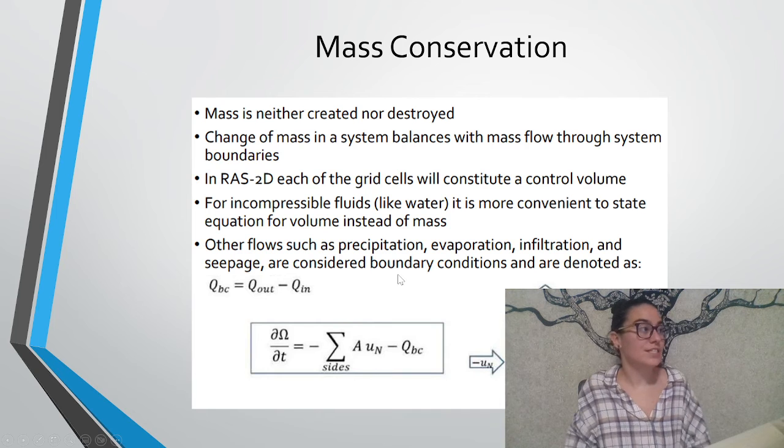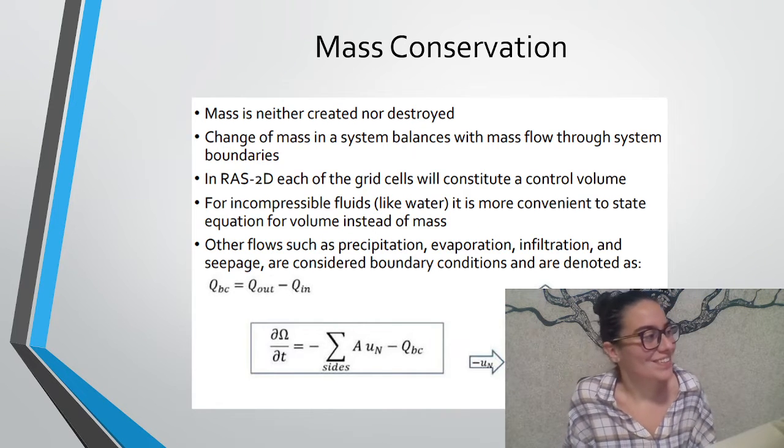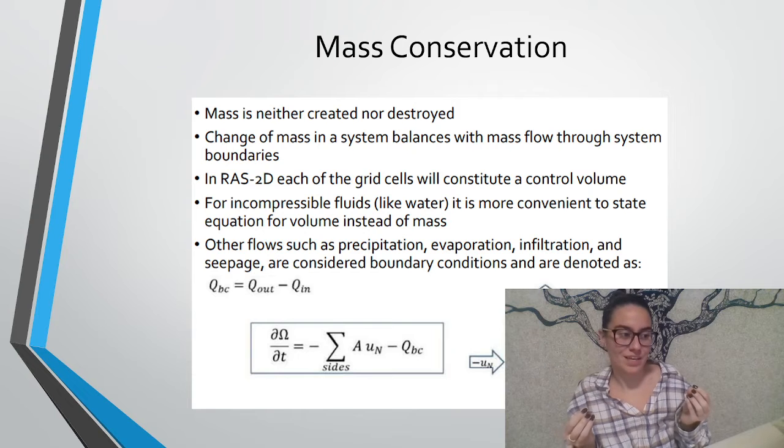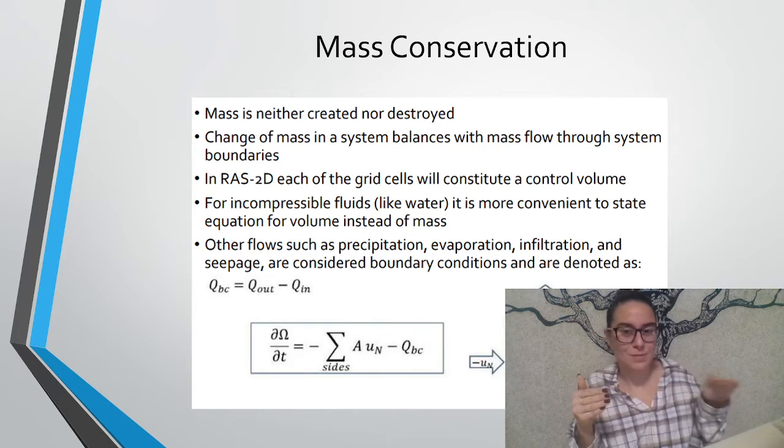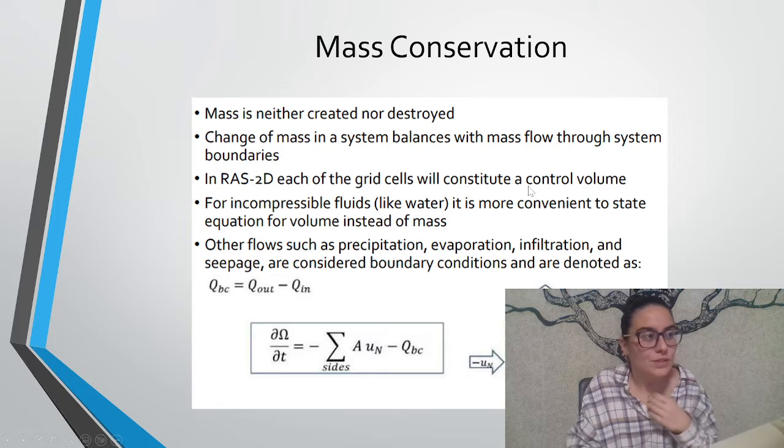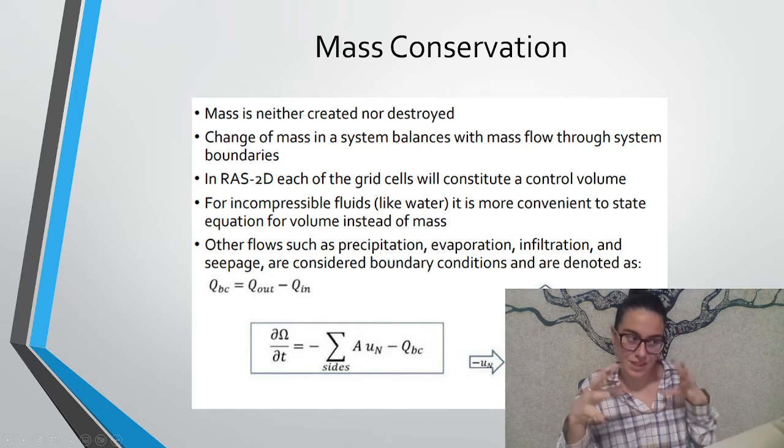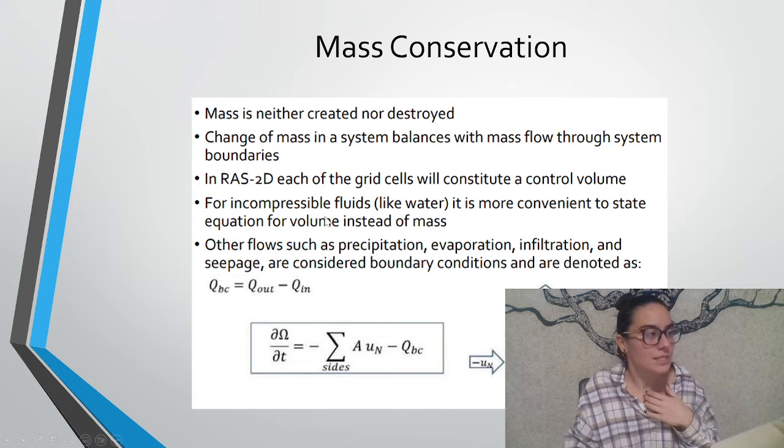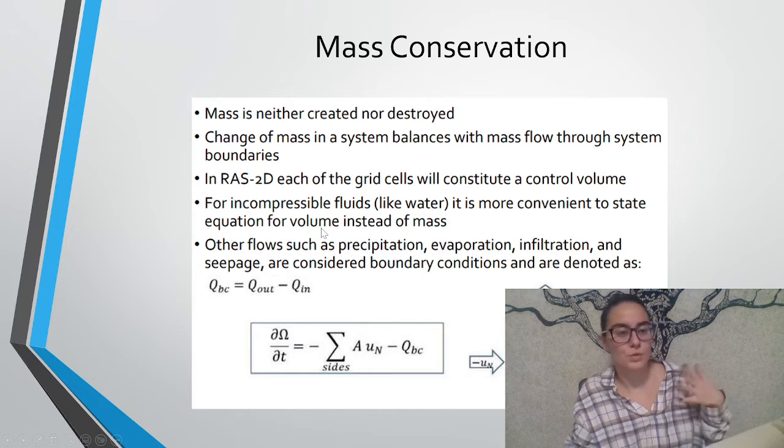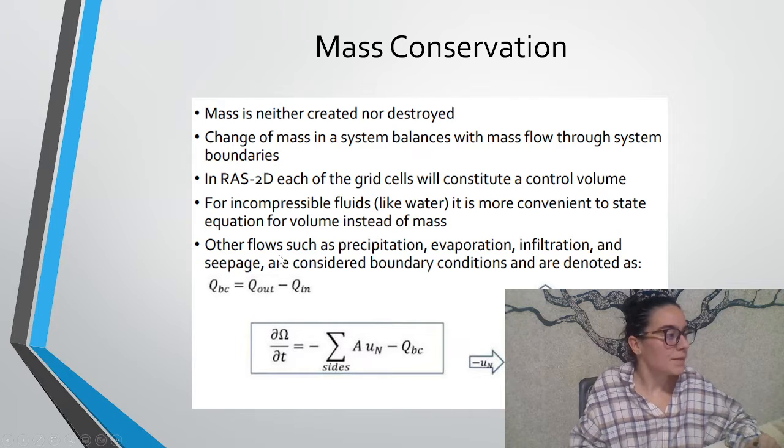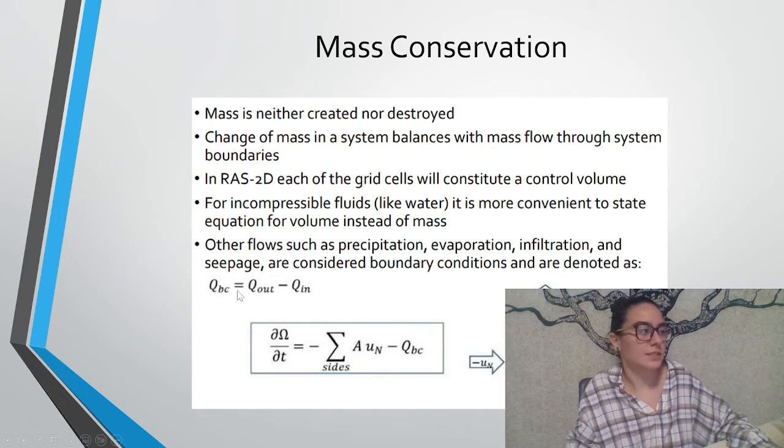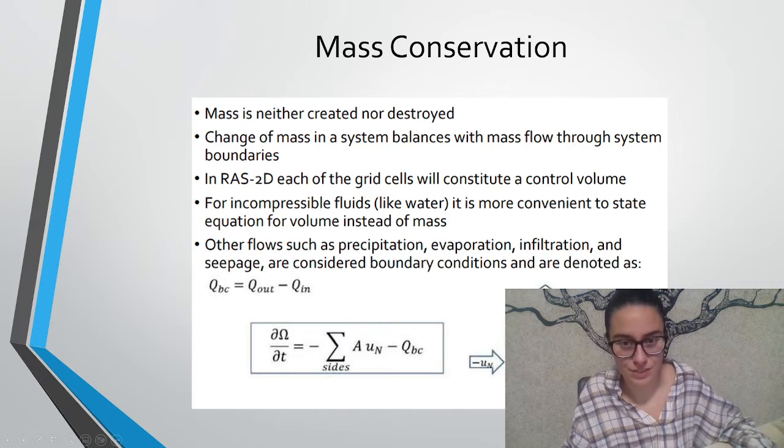About mass conservation, it just means that mass is neither created nor destroyed and that changing mass in the system balances with mass flow through the system boundaries. What comes in minus what comes out equals the difference within the system. In RAS 2D each of the grid cells will constitute a control volume. For incompressible fluids like water it is more convenient to state the equation for volume instead of mass. Other flows such as precipitation, evaporation, infiltration and seepage are considered boundary conditions and are also included in our mass conservation equation.